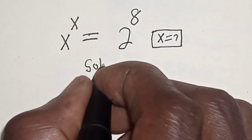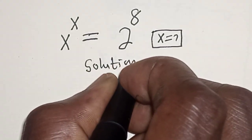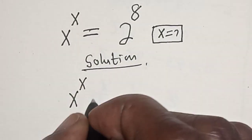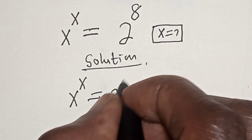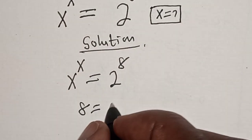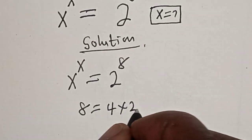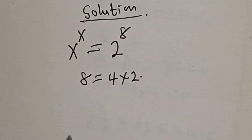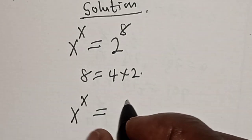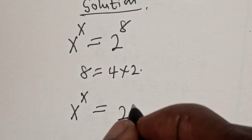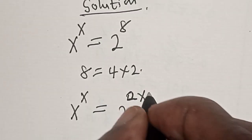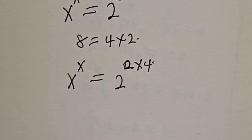Solution. s raised to power s is equal to 2 raised to power 8. Now, 8 is equal to 4 multiplied by 2. Then, s raised to power s is equal to 2 raised to power 2 multiplied by 4.